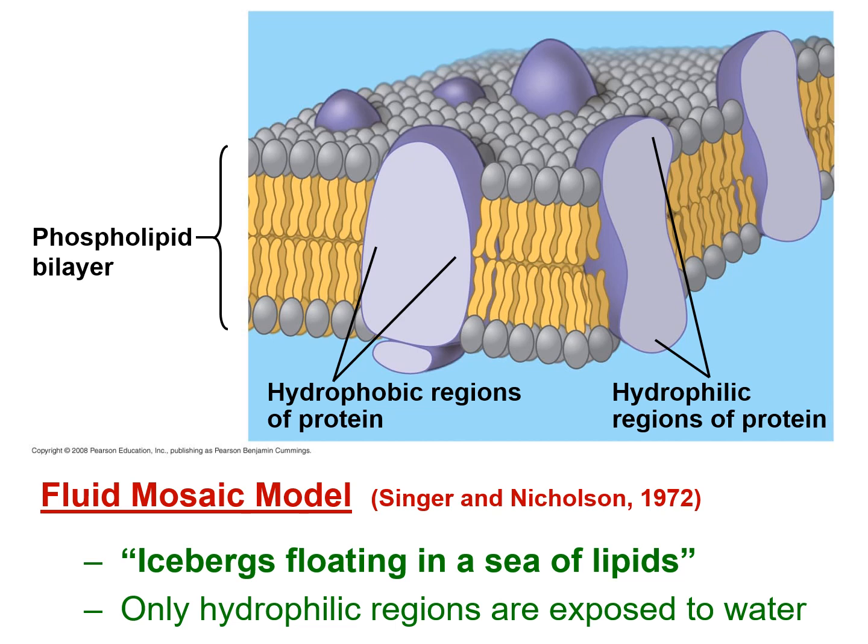This is our current model of biological membranes — it's held up well over the last 50 years and lots of experiments have supported it. It's known as the fluid mosaic model. It's a mosaic because it consists of more than one part — proteins and lipids. And it's fluid, meaning things are moving around. Those proteins can move from side to side, and those phospholipids can move from side to side. Singer and Nicholson famously referred to the proteins as icebergs floating in a sea of lipids — it's a very dynamic, very fluid structure.